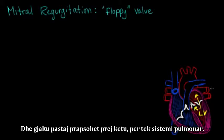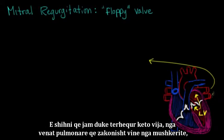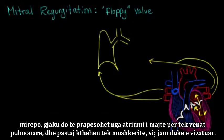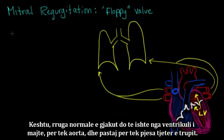Blood can actually back up from the left atrium into the pulmonary system. I'm drawing lines from the pulmonary veins that usually come from the lungs, showing how blood gets backed up from the left atrium to these pulmonary veins and back to the lungs. The normal path of blood would be from the left ventricle to the aorta and out to the rest of the body.